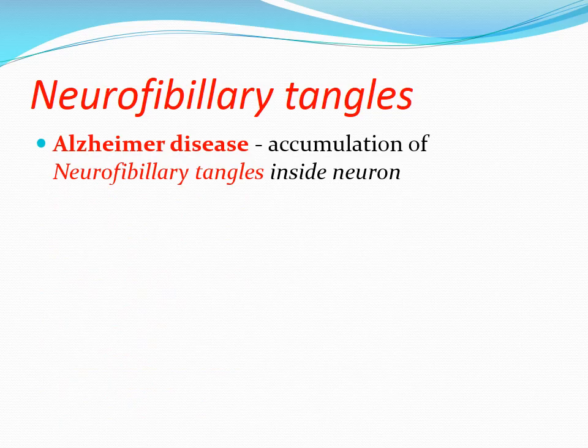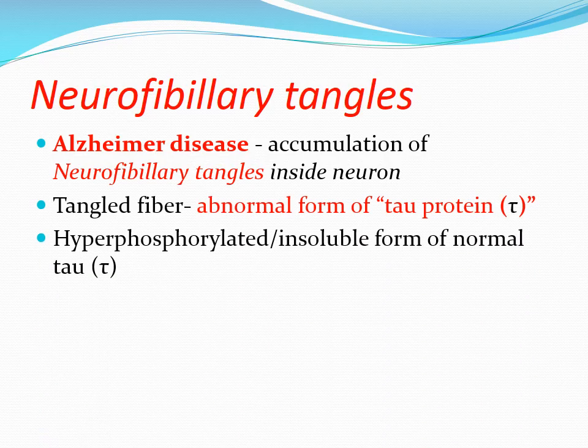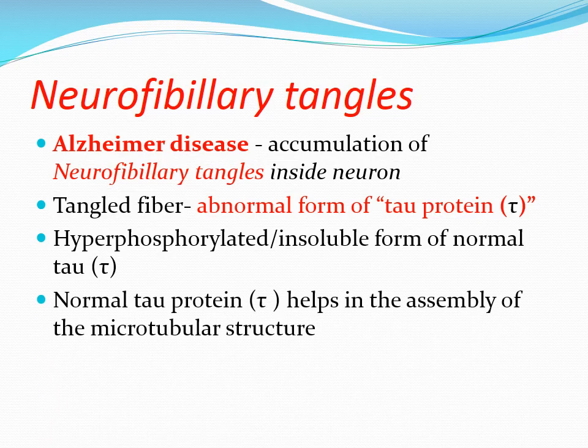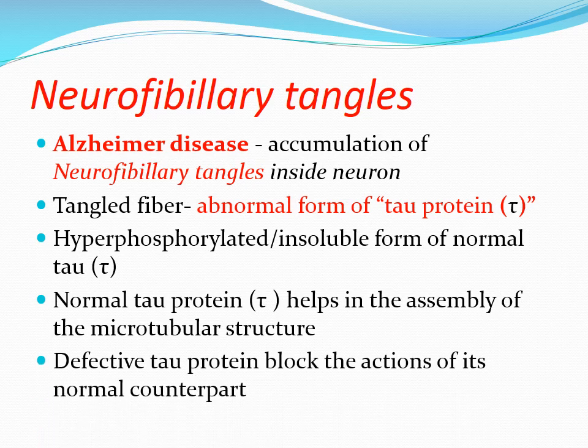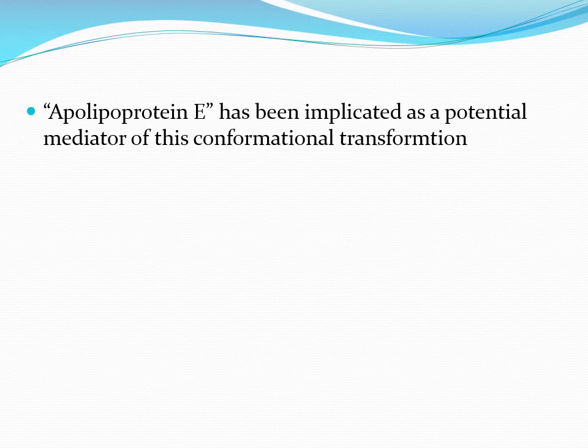A second biological factor involved in the development of Alzheimer's disease is the accumulation of neurofibrillary tangles inside neurons. A key component of these tangled fibers is an abnormal form of the tau protein, which is a hyperphosphorylated and insoluble form of normal tau protein. Normal tau protein helps in the assembly of the microtubular structure; the defective tau protein blocks the action of its normal counterpart. Apolipoprotein E has been implicated as a potential mediator of this conformational transformation.